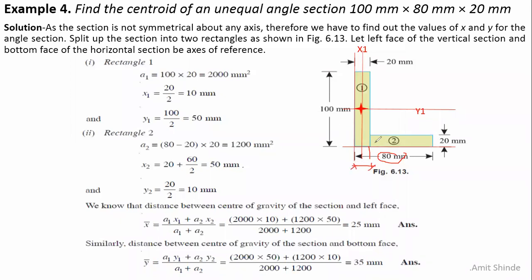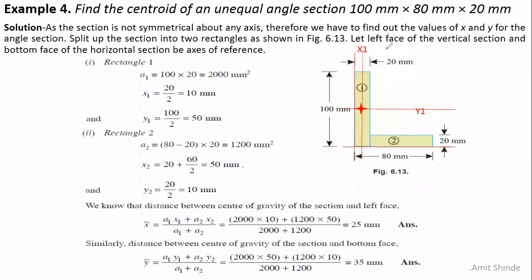The remaining horizontal length is 80 minus 20 = 60 millimeters. The area of rectangle two is 60 by 20 = 1,200 square millimeters. The CG location y2 is at 20/2 = 10 millimeters from the bottom. For x2, the CG is at half of 60 = 30 millimeters from the start of rectangle two, but measuring from the left face we add 20, giving x2 = 20 + 30 = 50 millimeters.